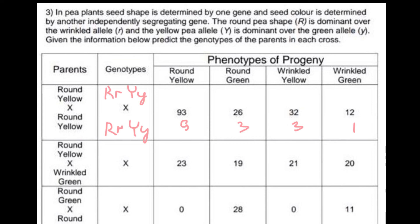Now let's look at the second row. The first parent has the phenotype round and yellow, so at least one dominant R allele and one dominant Y allele must be present, but we don't yet know the second allele. The second parent is wrinkled and green, so its genotype is fully determined as rryy.